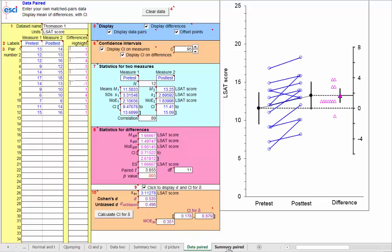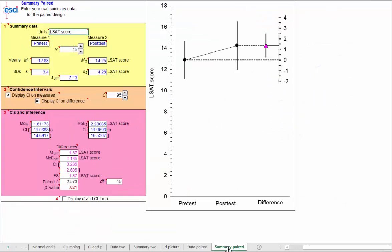Next, let's go to the next page in Esci, Summary Paired. There it is. And here I've got the data for actually Thompson 2. And here I only need to put in summary statistics, not the full data. So if you only have summary statistics, use this page for the paired design. I enter sample size 16, mean and standard deviation for pre-test and post-test. And I have to enter one more thing, S-diff, the standard deviation of the differences, 2.1 there.